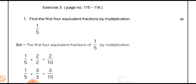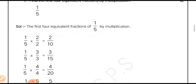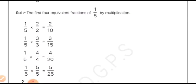This is exercise 3, on page number 115. The first question is find the first four equivalent fractions by multiplication. Here we have to make use of multiplication method to find out the equivalent fractions of 1/5. Since the question mentioned first four equivalent fractions, that means we start from 2.